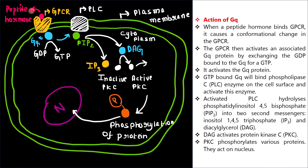When a peptide hormone binds GPCR, it causes a conformational change in the GPCR. The GPCR then activates an associated GQ protein by exchanging the GDP bound to the GQ for a GTP, which activates the GQ protein.